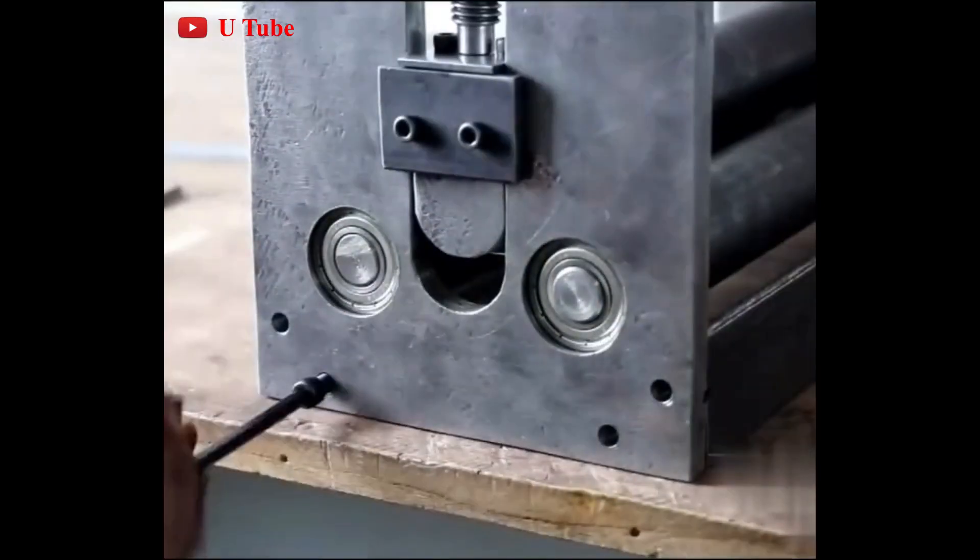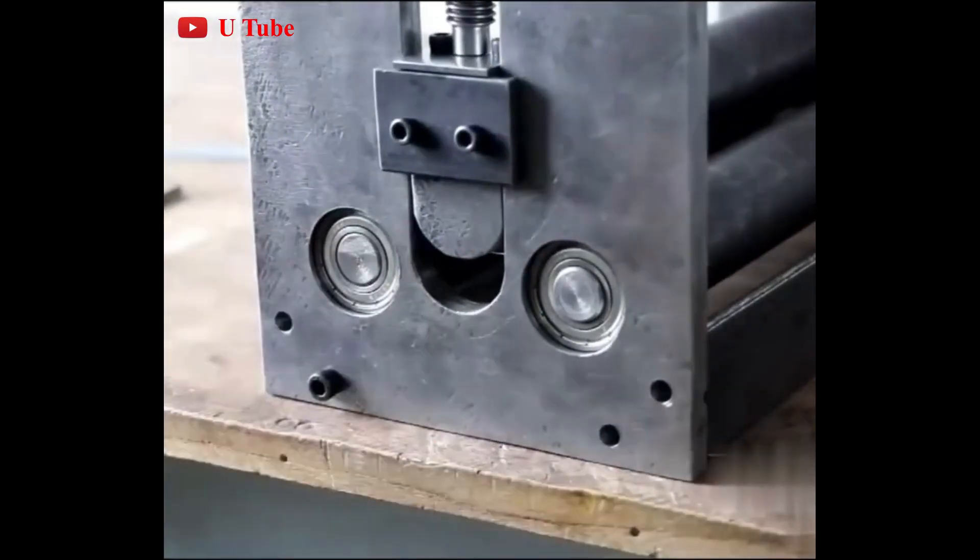A roll bender is a mechanical jig having three rollers used to bend a metal bar into a circular arc.